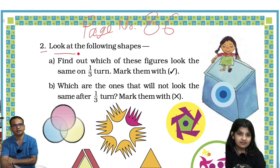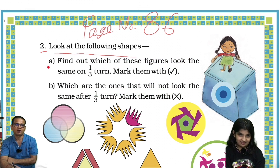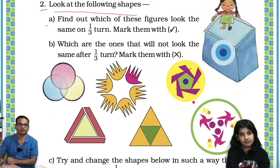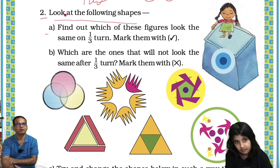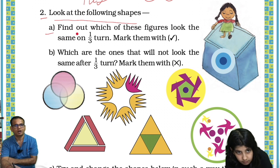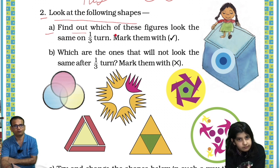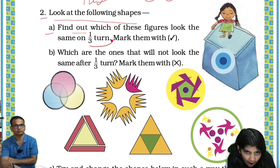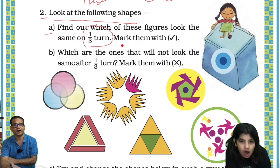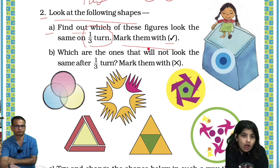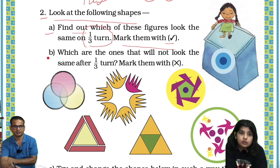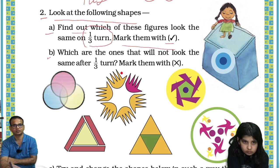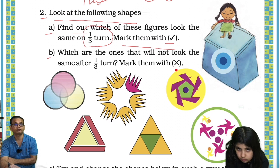Look at the following shapes. We have to find out which of these figures look the same on one third turn — mark them with a tick. Second: which are the figures that will not look the same after one third turn? Mark them with a cross.